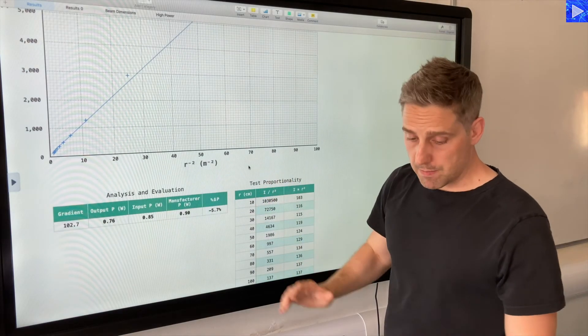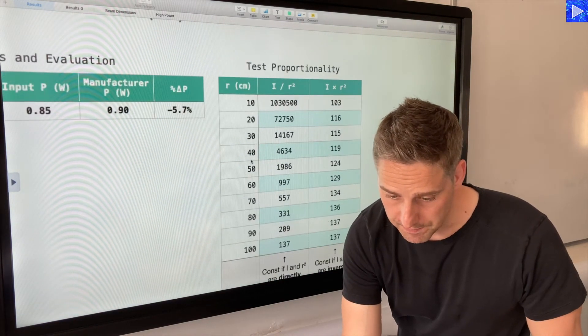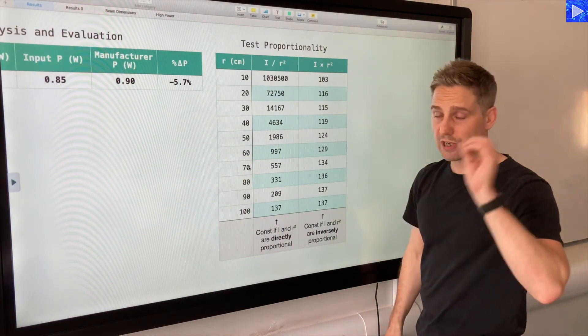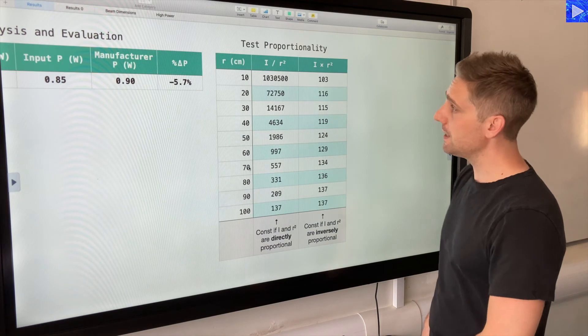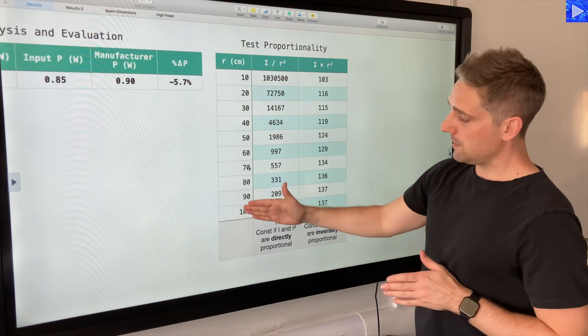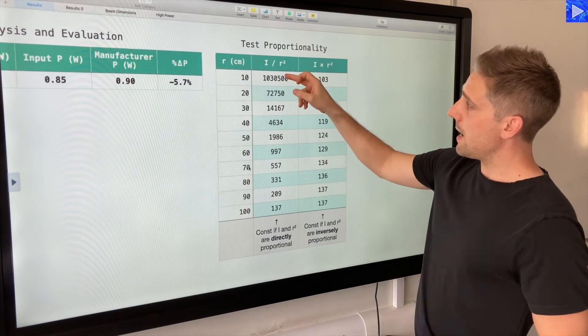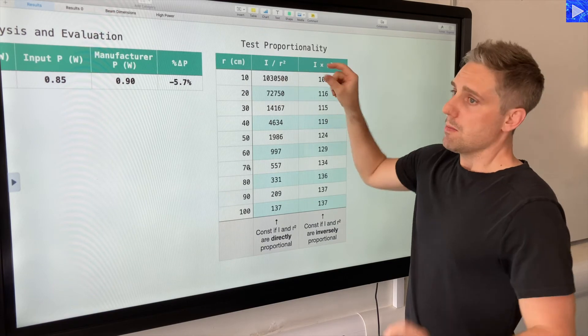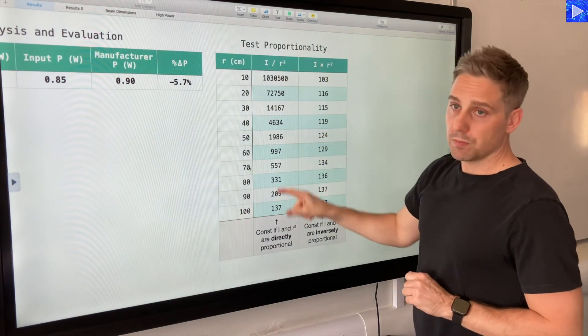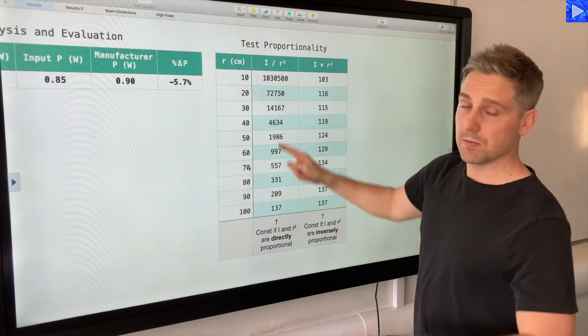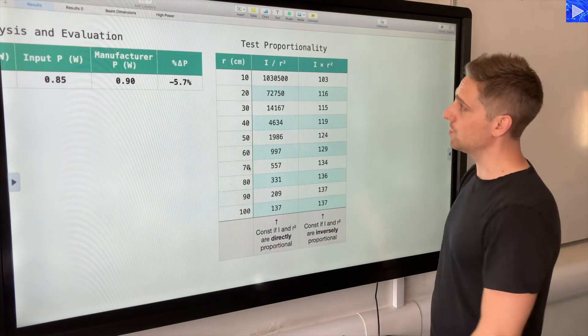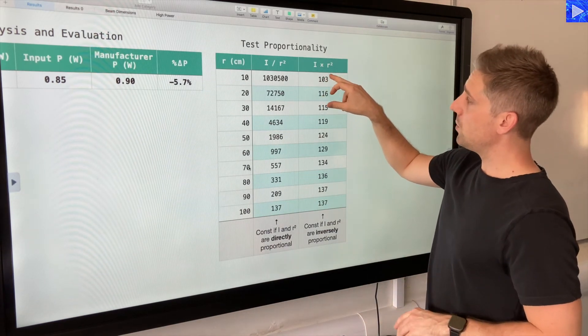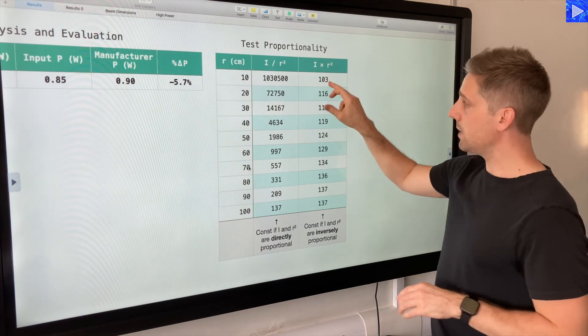But let's do a more rigorous test for the proportionality. Just for good measure, I'm going to do both proportionality tests, direct proportionality and inverse proportionality. So what I've taken is these are the r values that we were using. I calculated I divided by r squared here, because if you have direct proportionality, then all these values would be constant. You can see they're clearly not constant, so I is not directly proportional to r squared.